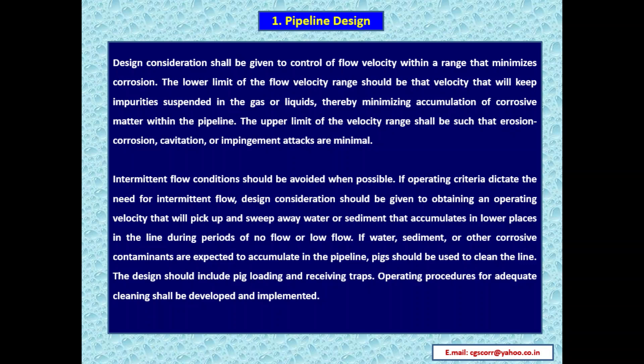Intermittent flow conditions should be avoided when possible. If required, design consideration should be given to obtaining an operating velocity that will pick up and sweep away water or sediment that accumulates in lower places during periods of no flow or low flow. If water, sediment, or other corrosive contaminants are expected to accumulate, pigs should be used to clean the line. The design should include pig launching and receiving traps, and operating procedures for adequate cleaning shall be developed and implemented.